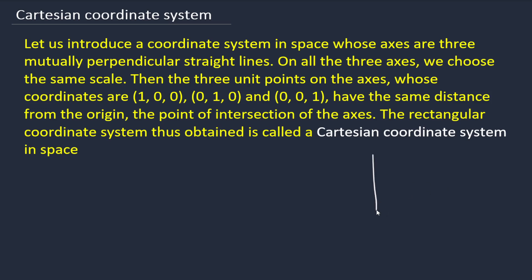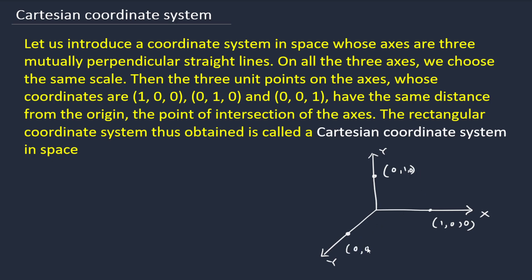Let us draw three perpendicular axes: x-axis, y-axis, and z-axis. If we take three points like (1,0,0), (0,1,0), and (0,0,1) and draw this particular rectangle, each side is equal to 1. This particular coordinate system is called a rectangular coordinate system.